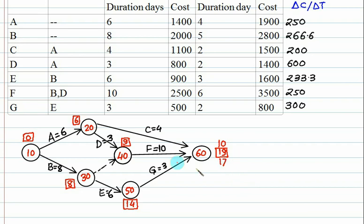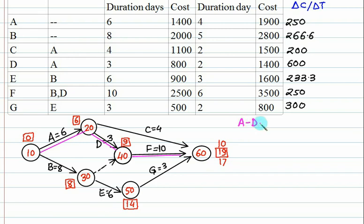Now we'll go for the critical path. How are you getting 19? You are getting 19 via node 40 to node 60. Then how are you getting 9 at node 40? You are getting it from node 20 to 40. So that is the critical path. The critical path is A, D, F, and the duration is 19 days.